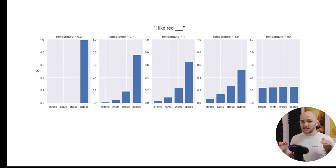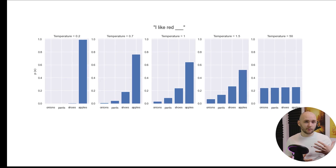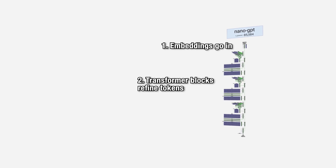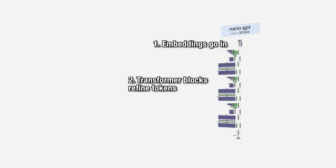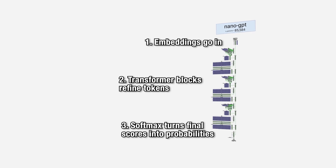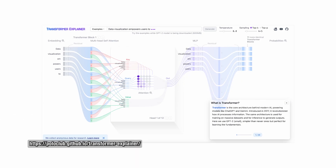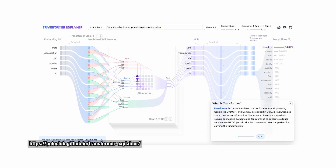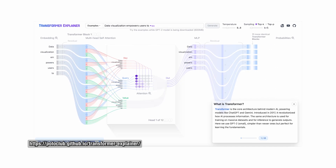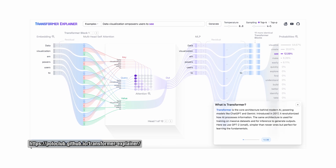A higher temperature smooths things out, so the model takes more risks and generates more surprising or creative completions. That's why temperature is such a handy dial when you want the model to shift between being precise versus creative. So that is the full loop: embeddings go in, transformer blocks refine them again and again, and the softmax function turns the final scores into probabilities for the next token. That's how step-by-step the LLM generates text. And here's the simple fact: the same transformer architecture from 2017 is still at the very heart of GPT-4, Claude, DeepSeek, and most other cutting-edge models today.